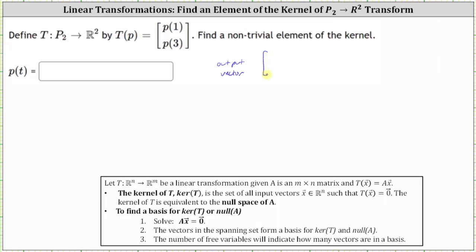The output vector in R2 under this transformation is always in the form p of one, p of three. But for the kernel, we know the output must be the zero vector. So if the output is the zero vector, this indicates that p of one must equal zero and p of three must also equal zero.